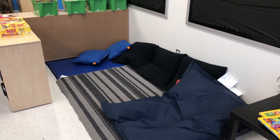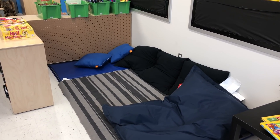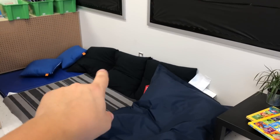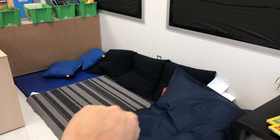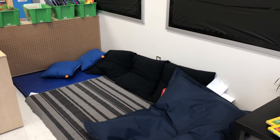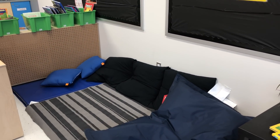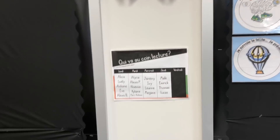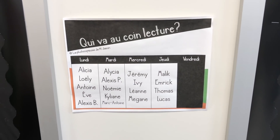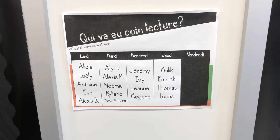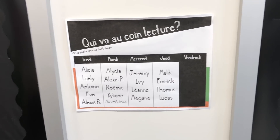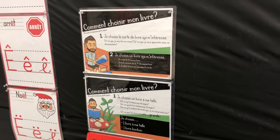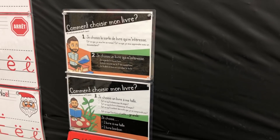Voici mon coin lecture. On a reçu un gros tapis bleu fait pour le coin lecture. On nous a fourni le gros pouf. J'ai apporté de la maison un coussin IKEA qui traînait chez moi depuis des années — il est enfin dans mon coin lecture. Et deux coussins d'extérieur parce que c'est plus facile à laver. Au-dessus du coin lecture, j'ai mon horaire affiché. Je suis toujours une journée de vide pour être plus flexible lors des semaines de quatre jours. À gauche, j'ai mes affiches sur comment choisir son livre et choisir un livre à sa taille.